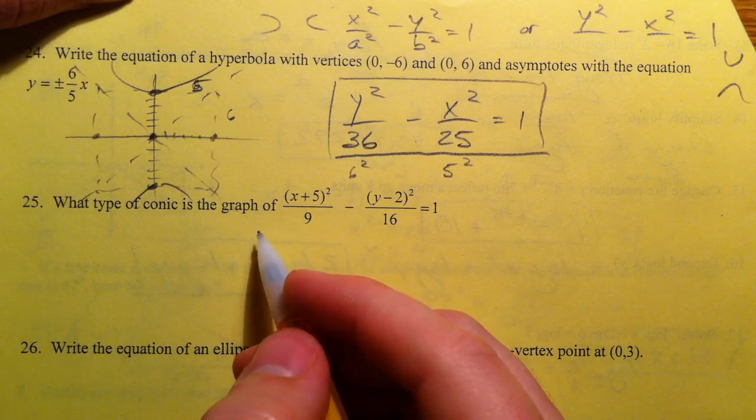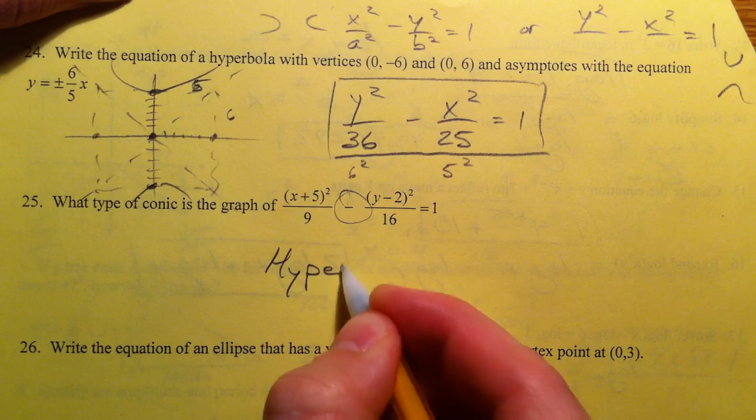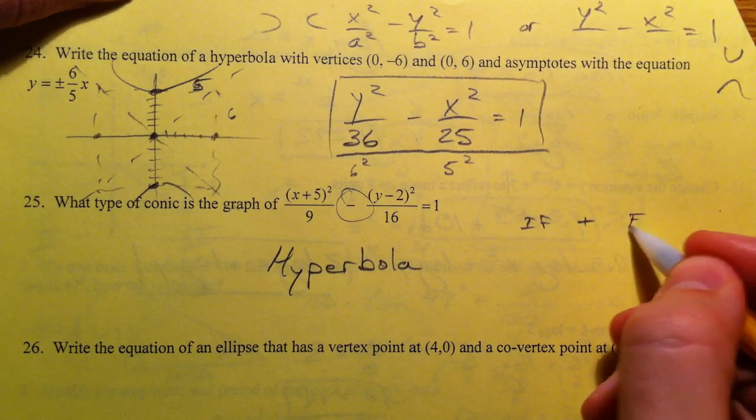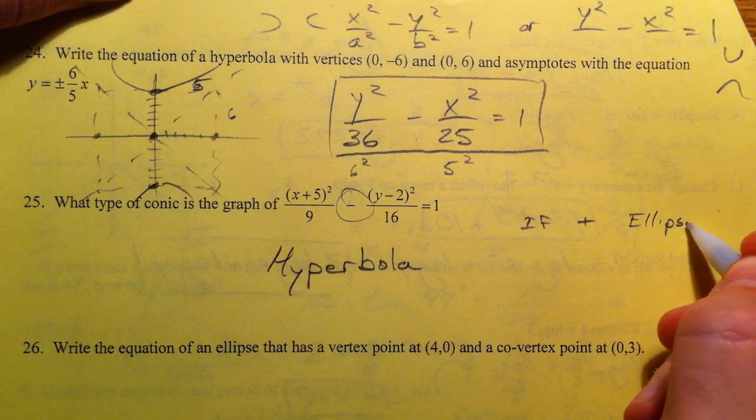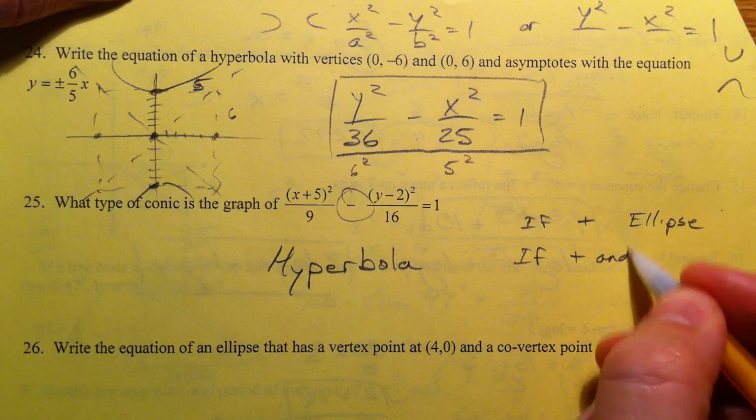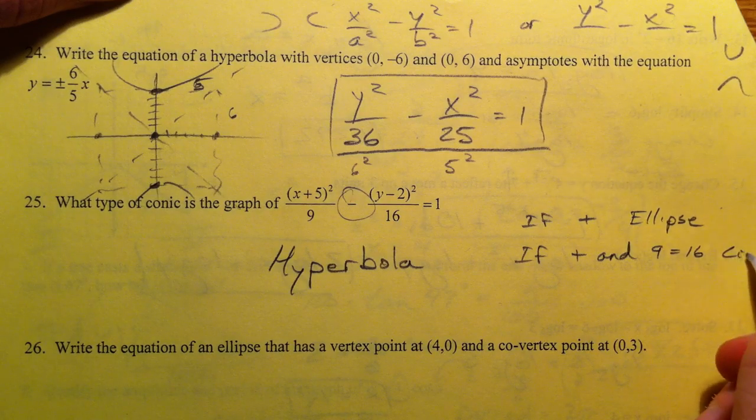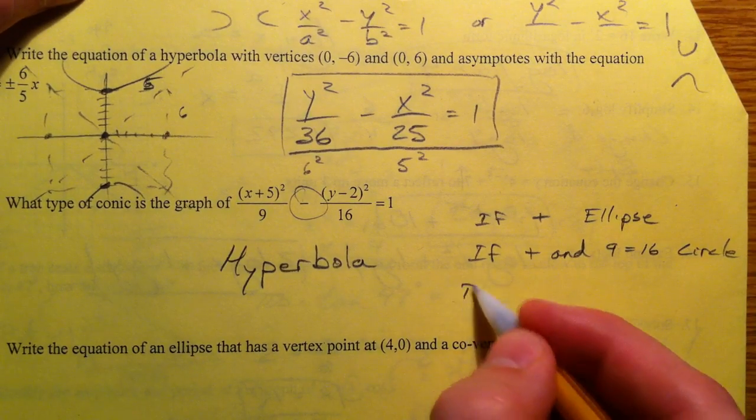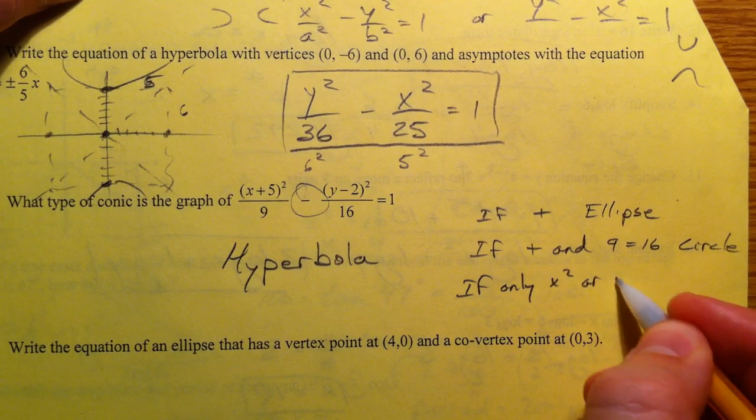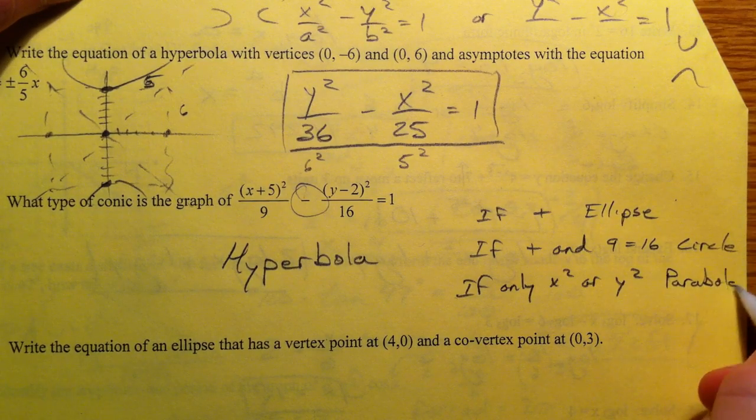What type of conic is this? Well, as soon as you see the minus we know that this is going to be a hyperbola. If plus it would be an ellipse. If plus and the 9 and the 6 were equal it would be a circle, and if only 1 squared it would be a parabola. So just keep that in mind we saw that a lot.